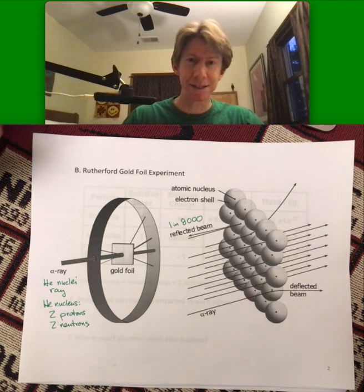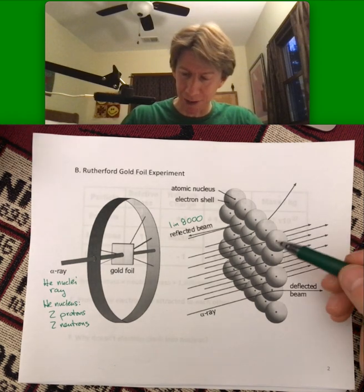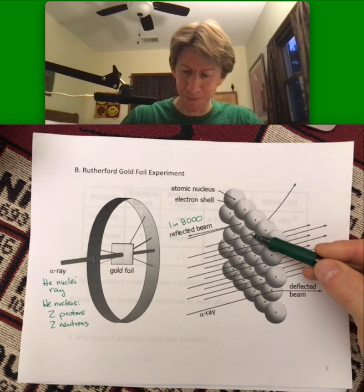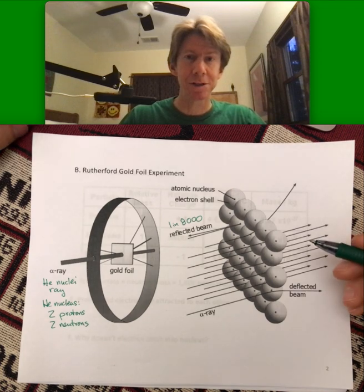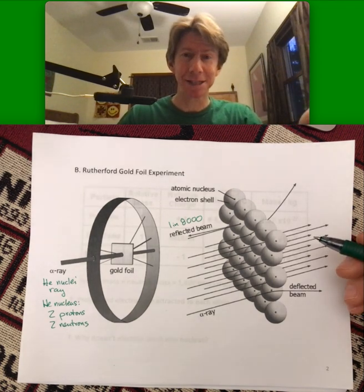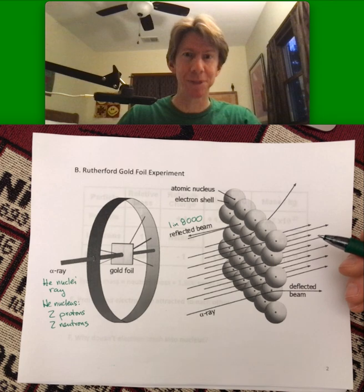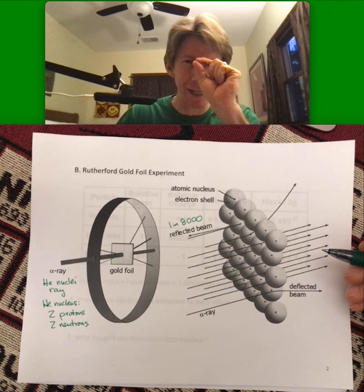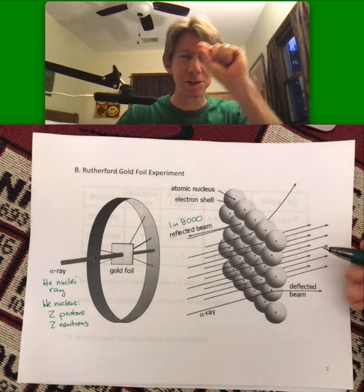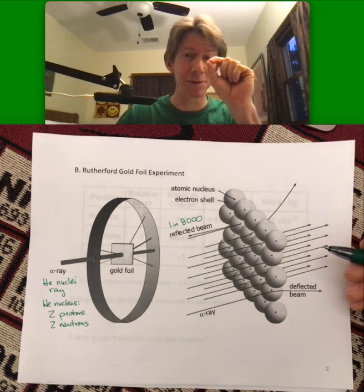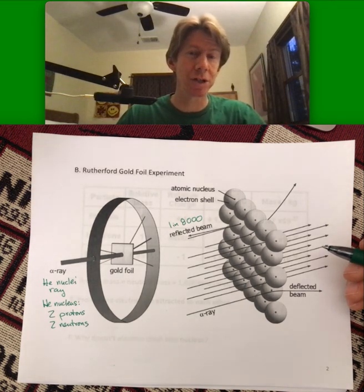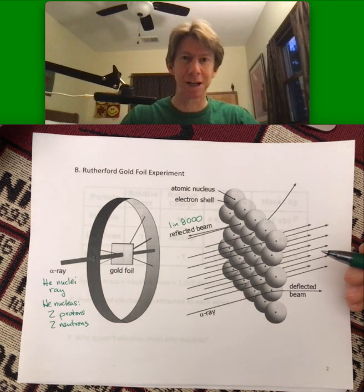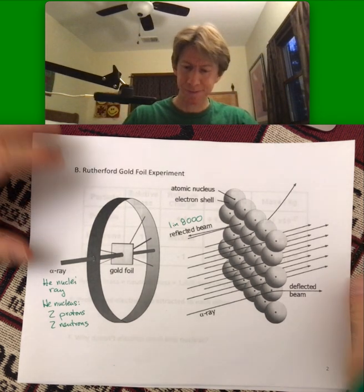And so the fact that it bounced off about 1 in 8,000 was used to hypothesize and then eventually be proven as a theory that the nucleus was a teeny, tiny center of mass in the middle of the atom surrounded by largely empty space in which the electrons flew. Pretty cool.